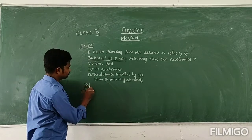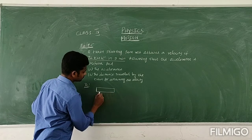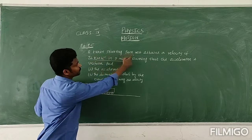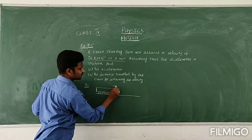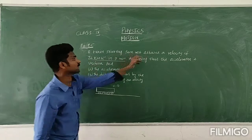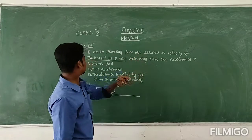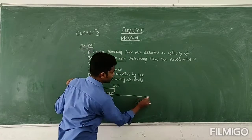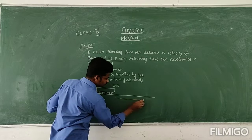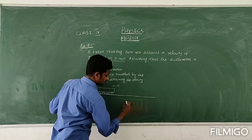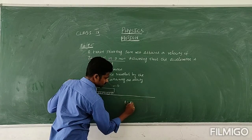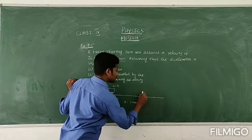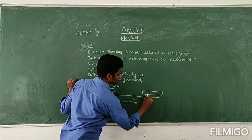See the solution. When the train starts, a train starting from rest means its initial velocity u is equal to 0. It attains a velocity of 72 km per hour in 5 minutes, so it started to move and travelled for 5 minutes. Time t is equal to 5 minutes, and after 5 minutes it reached its velocity.